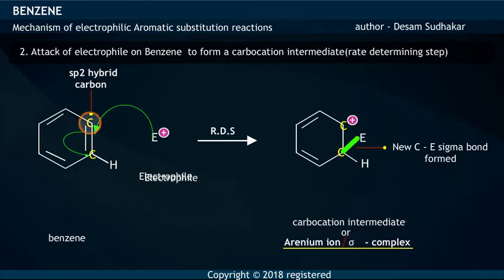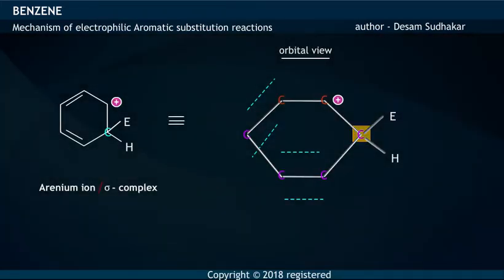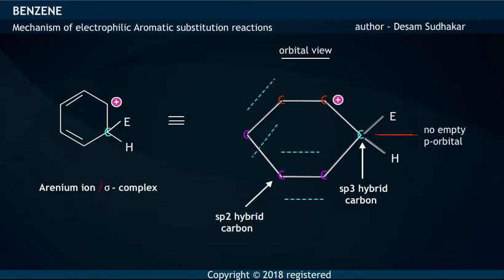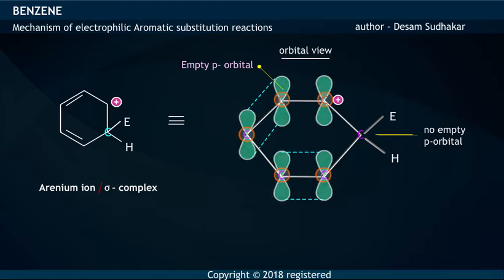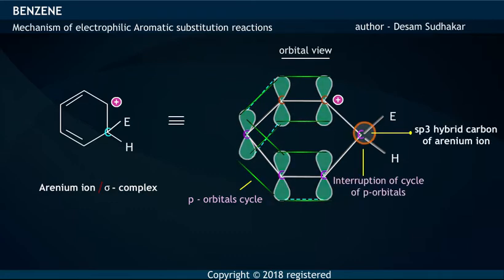Here, an Sp2 hybridized carbon of Benzene is converted into an Sp3 hybridized carbon of the Arenium Ion. As the carbon in the Arenium Ion becomes Sp3 hybridized, it does not possess a p-orbital. Due to this, the cycle of p-orbitals is interrupted at the Sp3 hybridized carbon of the Arenium Ion. Thus, the Arenium Ion loses aromaticity.